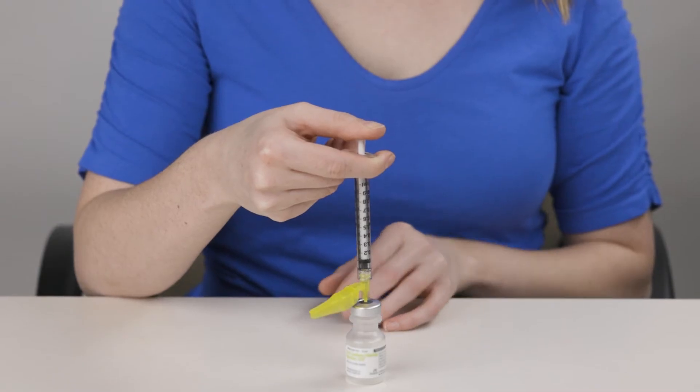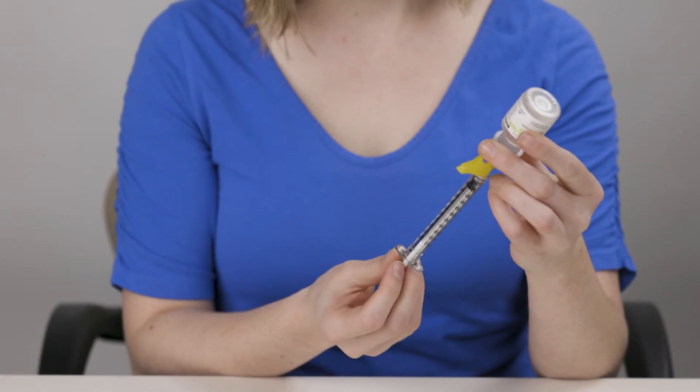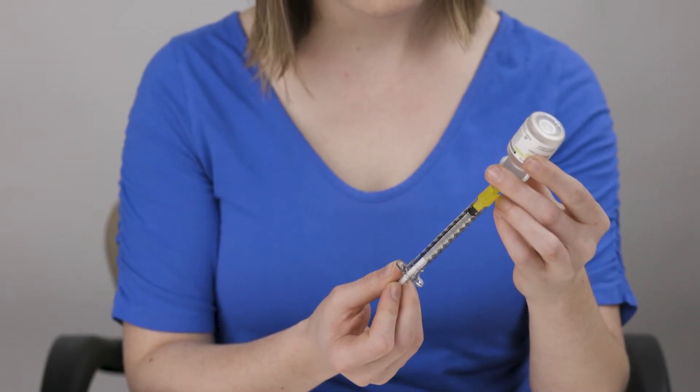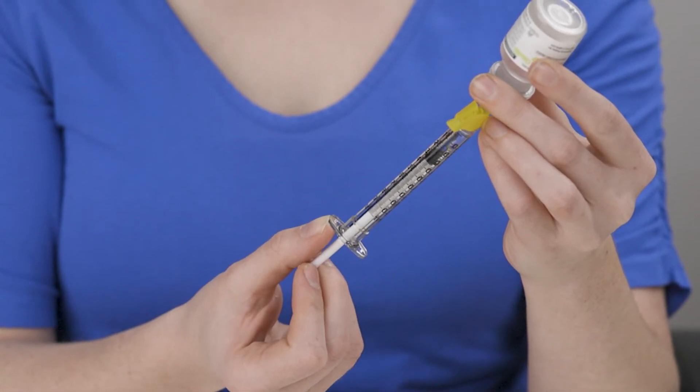Keeping the needle in, turn the vial upside down and make sure the tip of the needle is in the liquid. Slowly pull back on the plunger until the correct dose of medication has entered the syringe.